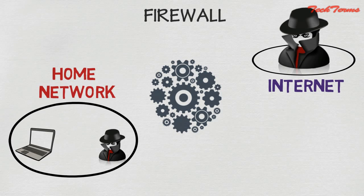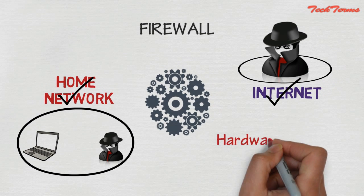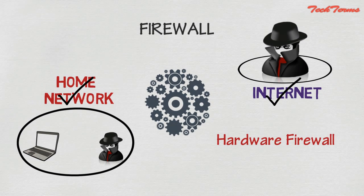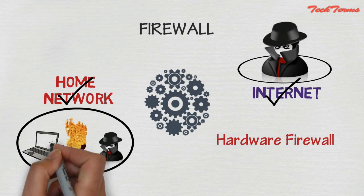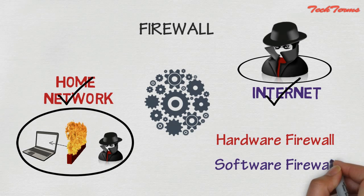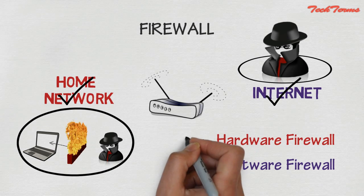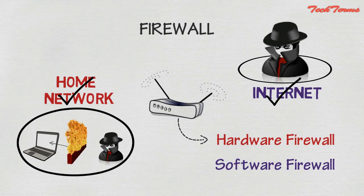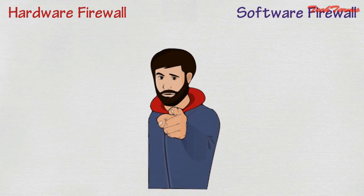The firewall that is present in between two networks is called a hardware firewall, and the one that is present in your computer is called a software firewall. Your home router itself acts as a hardware firewall, as both of these firewalls are used only to protect you from being hacked.